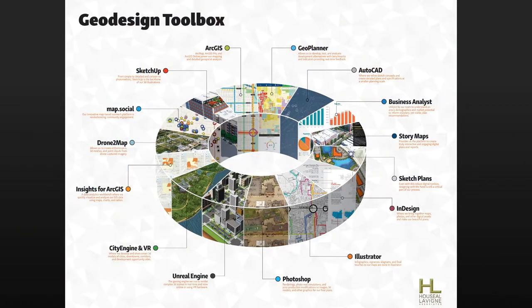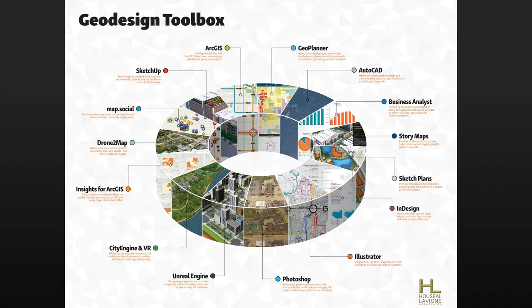We put together a graphic for the Esri User Conference a couple of years ago, highlighting everything in our geodesign toolbox — all the core tools we're in and out of on a daily basis as we run through all the different planning we do. There's a lot of Esri software in here, a lot of Adobe software, we're still doing things like sketching by hand, Unreal Engine has been an exciting addition, and there's some software we created called map.social. But I want to talk today about CityEngine and how we use it.